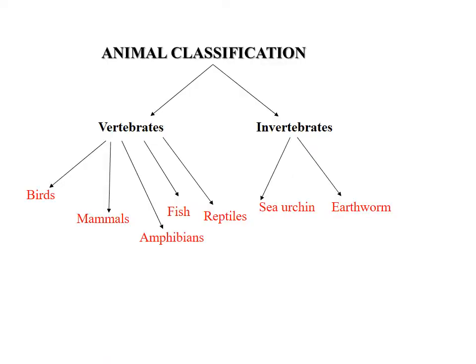It shows animal classification. Animals in general are classified into two groups: vertebrates and invertebrates. In the vertebrates group, we have five kinds of animals: birds, mammals,